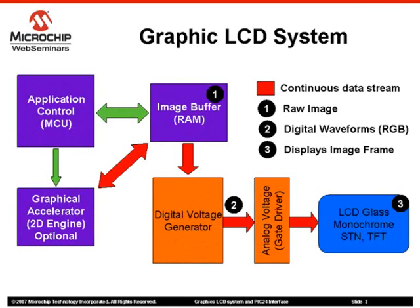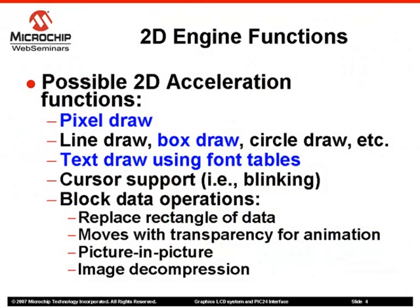For embedded requirements, a graphical accelerator typically provides acceleration to 2D drawing functions like line, rectangle, and block fill. On a PC designed for video games, there may be hardware accelerators for 3D drawing as well. The graphics accelerator is an optional block and is not available on many LCD controllers. This is a list of possible 2D acceleration functions. The items in blue are the most common features on LCD controllers that offer graphics acceleration. Fewer than 50% of LCD controllers offer some kind of graphics acceleration, and very few offer all of them.